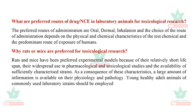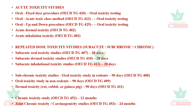The preferred routes of administration for toxicological research are oral, dermal, and inhalation. The choice of route depends upon the physical and chemical characteristics of the testing chemical — for example, if it is a gaseous substance, it could be given by inhalation. Rats or mice are preferred as experimental models because they have a relatively shorter lifespan, widespread use in pharmacological and toxicological studies, and availability of sufficiently characterized strains. Commonly used strains include Wistar or Sprague-Dawley rats, BALB/c mice, and Swiss albino mice.